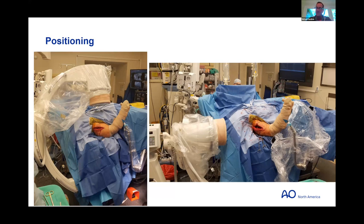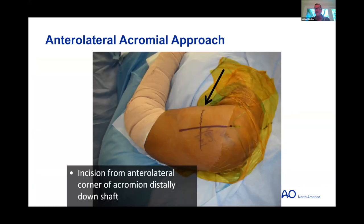With drapes on, the C-arm comes in from the head; tilt about 15 degrees to get a Grashey view for the AP, then the C-arm comes up and under for a good axillary. We don't fully abduct the arm for the axillary since we've got tenuous fixation, but we can get a very nice axillary view. The scapular Y view alone is difficult for things like sagittal plane angulation and lesser tuberosity displacement, making this a much nicer setup.